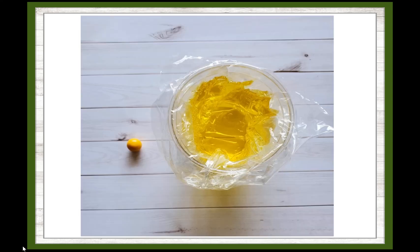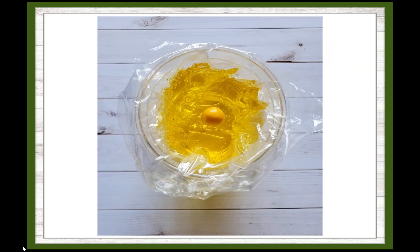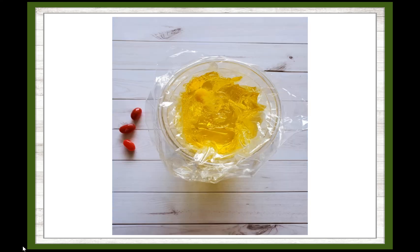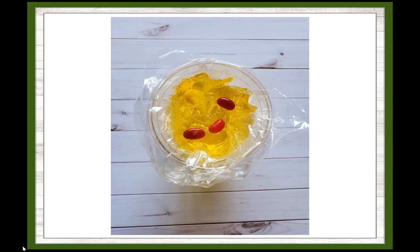Now it's time to start adding our organelles. We'll start with the gobstopper. The gobstopper represents the nucleus, the place where the DNA is stored. Next, we'll add our three red jelly beans. The jelly beans represent the mitochondria. A cell's mitochondria uses the process of cellular respiration to create energy for the cell.